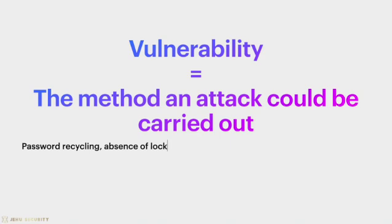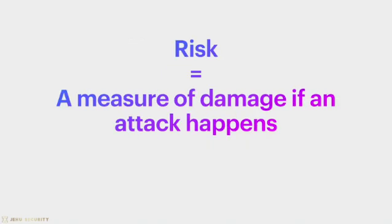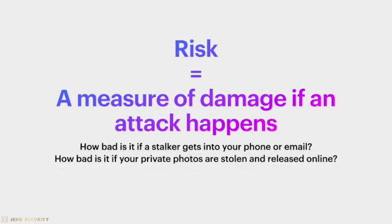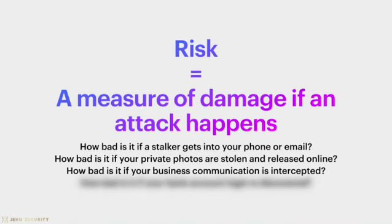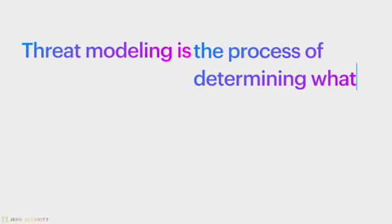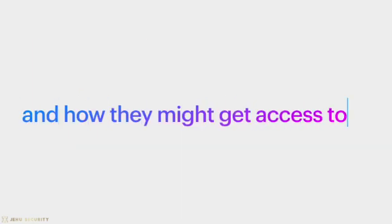A vulnerability could be password reuse across multiple accounts, no lock screen on your device, or using public Wi-Fi. Risk is a deliberate measurement of how much damage would be done if the threat were realized in an attack on a vulnerability. What is the outcome if your stalker gains access to your unlocked phone or email? What is the outcome if your online cloud storage is accessed using a compromised password from your Pinterest account? So in essence, threat modeling is the process of figuring out what you have that others might want to abuse and how they might get access to it.